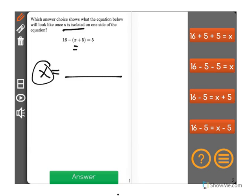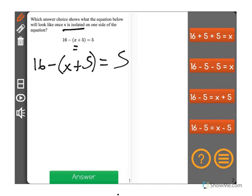And the way that we do this is by performing the same operation to both sides of the equation. The first thing that I'm going to do, however, is I'm going to take this equation right here, 16 minus x plus 5 equals 5, and I'm actually going to use the distributive property here to show that this negative sign refers to everything in the parentheses.